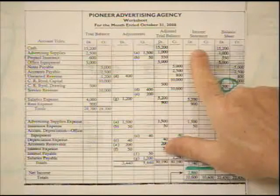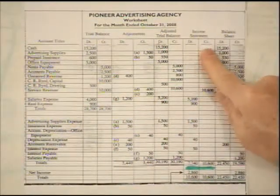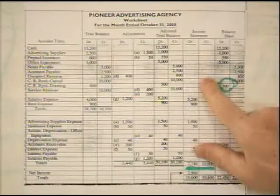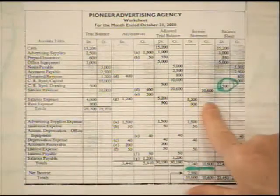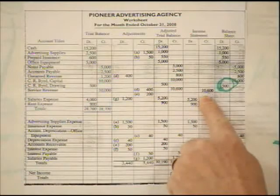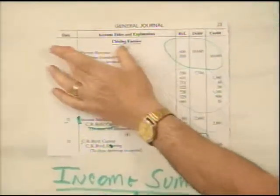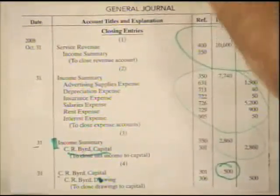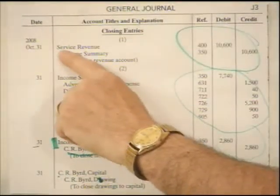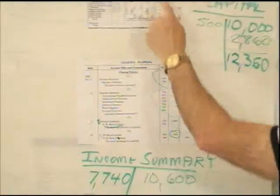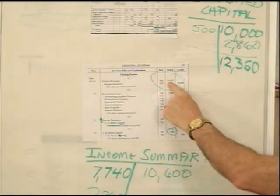Our starting point — I always tell students — is take your finger and put it at the top of the Income Statement column and run it down the credit side. We only have one account here, but you can have multiple revenue accounts. What do you have to do to all these accounts that are credits to make them turn to zero? The answer is you would have to debit them. So that would be our first closing entry. We have a general journal here, and the first thing I would do, since we're working as of October 31st, is put the date and then right next to the margin — everything in the credit column we need to debit — this is service revenue, so we'll debit the service revenue account $10,600.